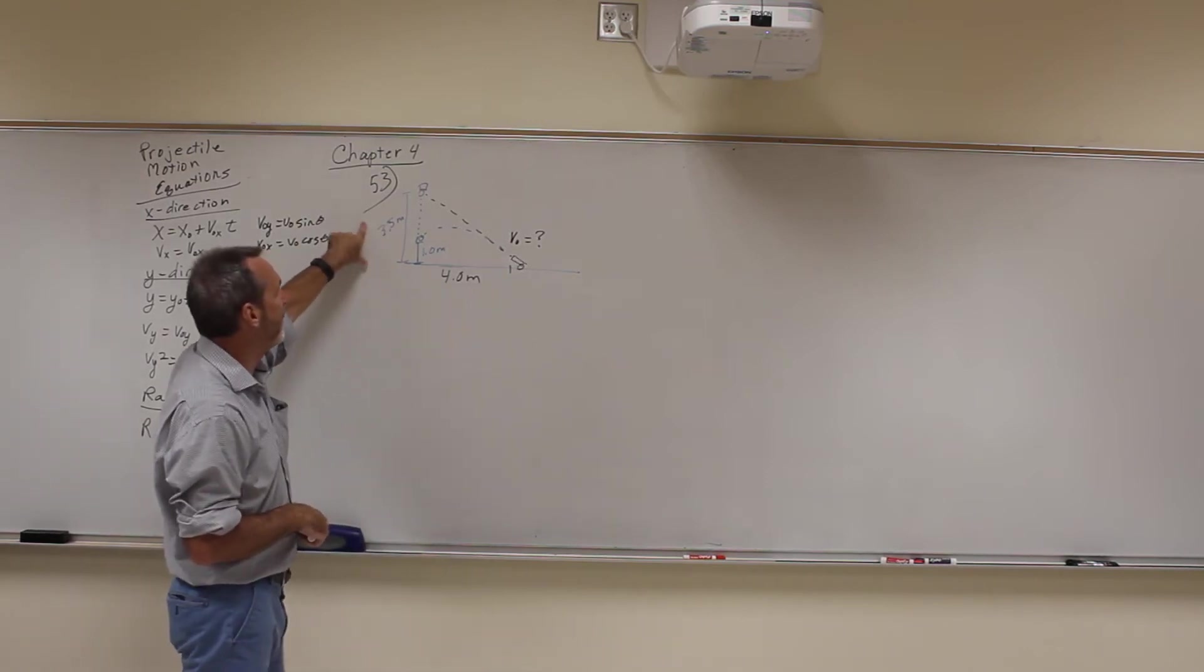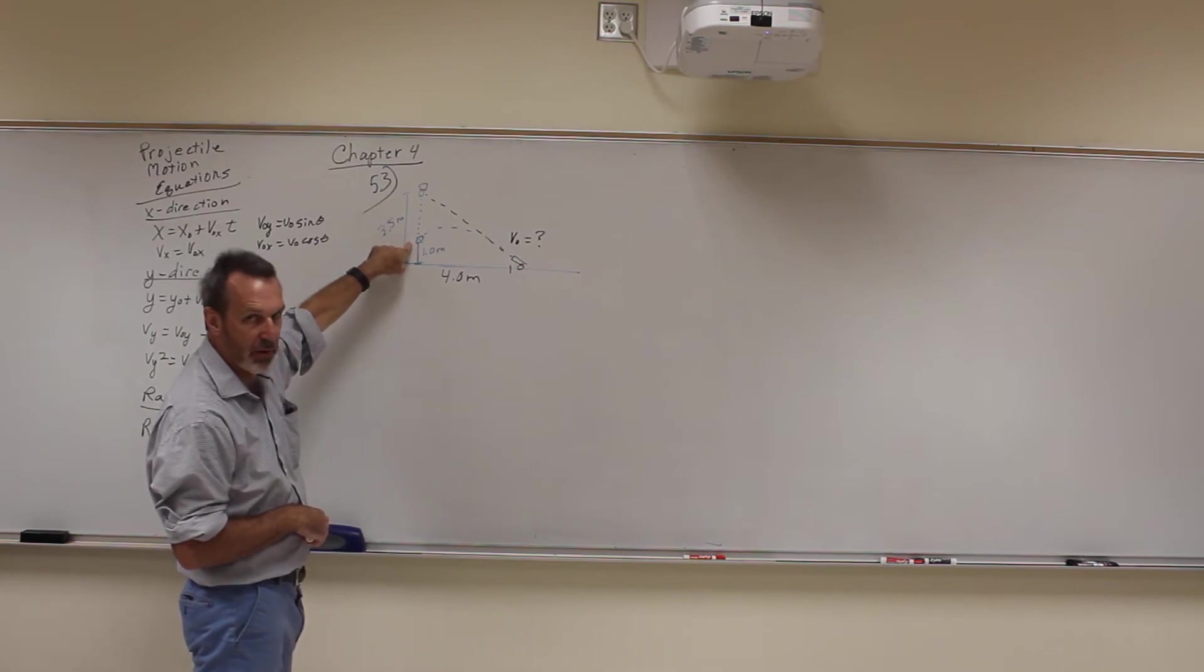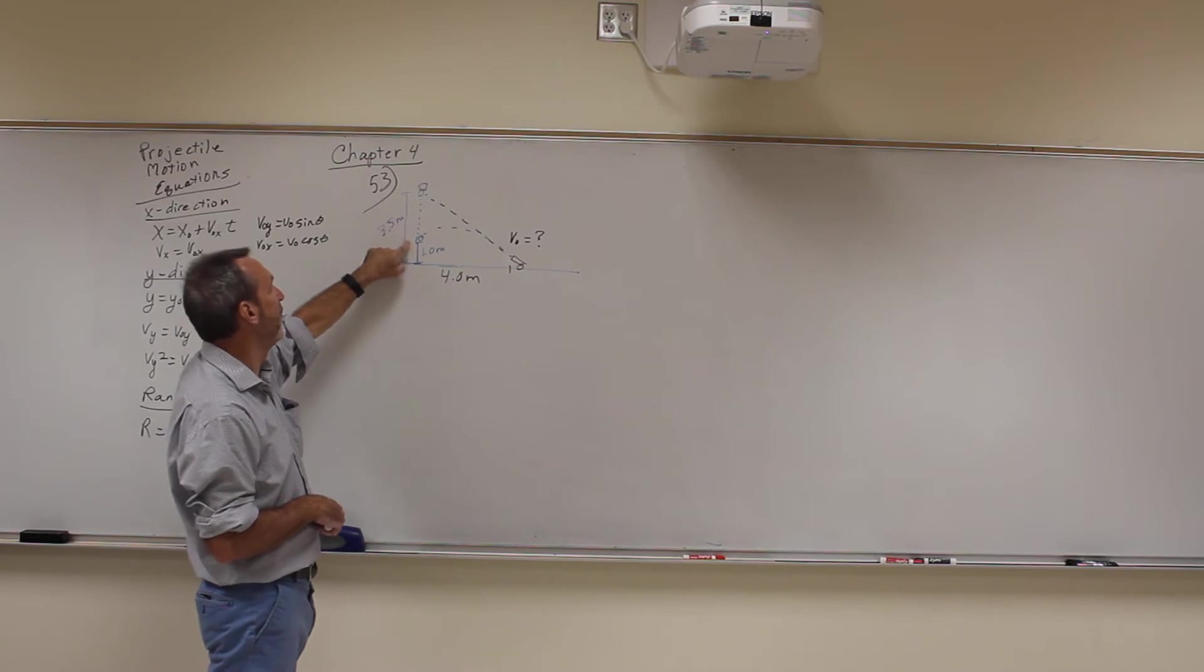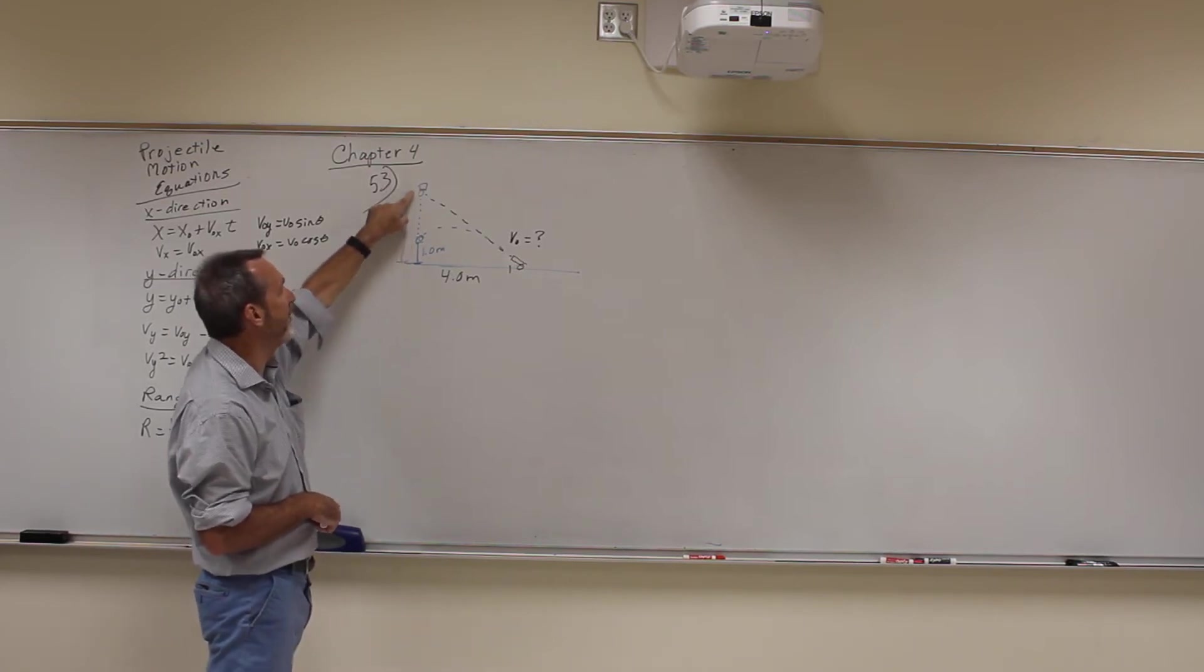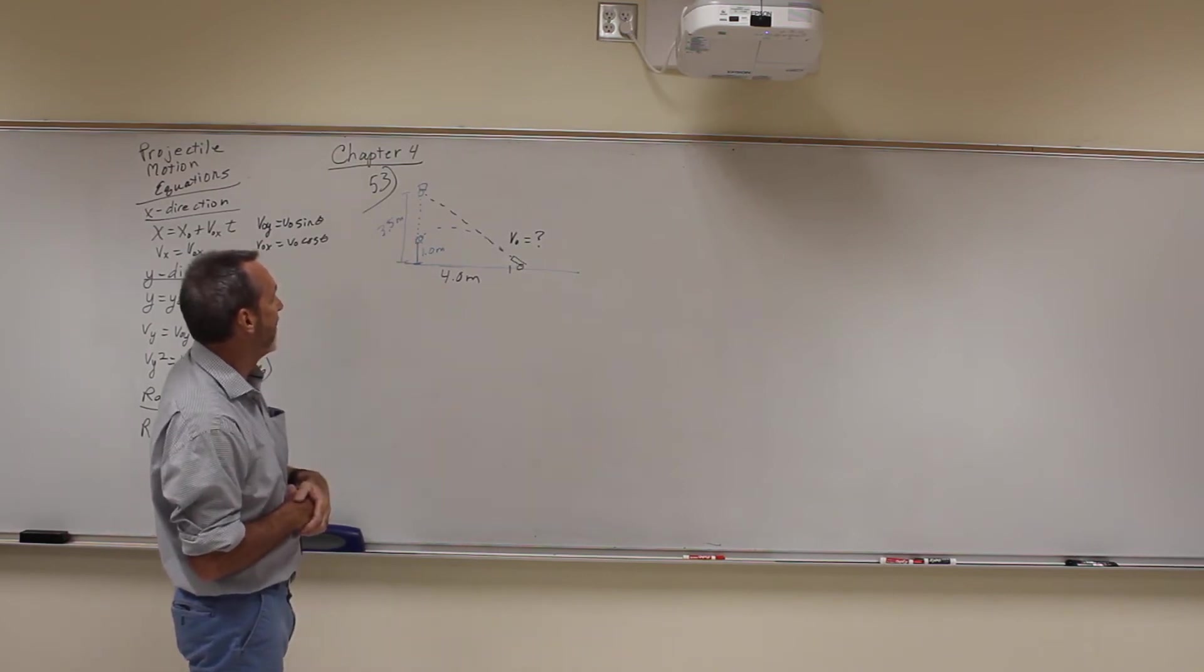This one we know the distance, the whole thing is 3.5, but it falls 2.5 before it hits. But we also don't know the time. So we don't know the initial velocity there. We know the initial velocity when it starts up here, but we don't know the final velocity here. So that doesn't help us out at all either.